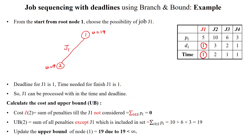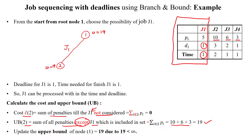When selecting job number 1, the deadline is 1 and the time to process is also 1, so it is feasible. The upper bound is the sum of all penalties except job 1 — that is 10 + 6 + 3 = 19. The cost is the sum of penalties of jobs not considered until job 1; since no jobs are left unconsidered, cost is 0. So cost = 0 and upper bound = 19, updating from infinity.